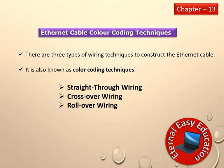The next topic is Ethernet Cable Color Coding Techniques. There are three types of wiring techniques: the first is Straight-Through wiring, the second is Crossover, and the third is Rollover.